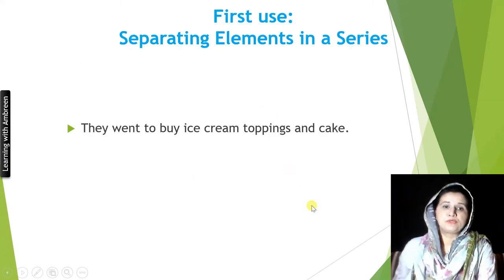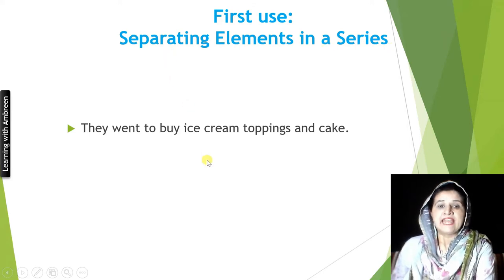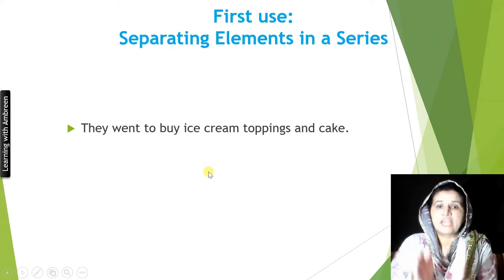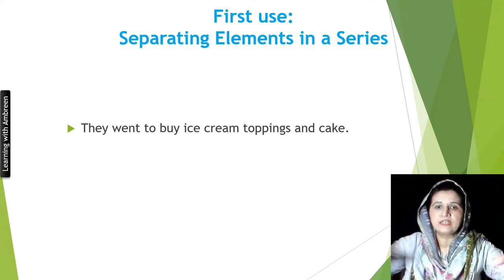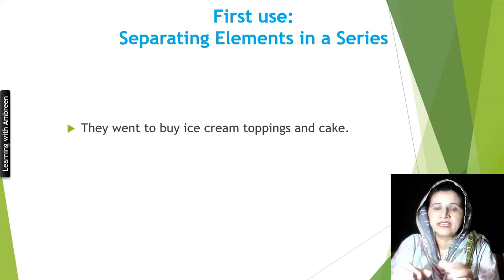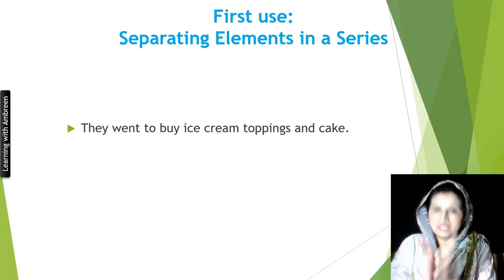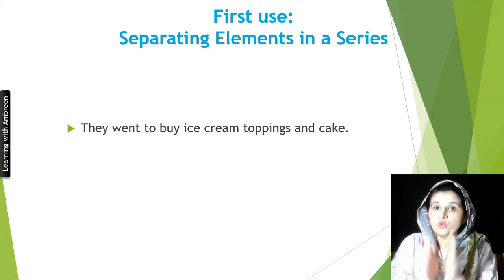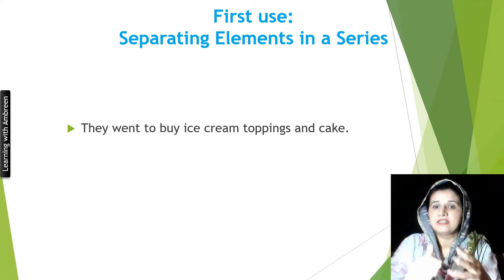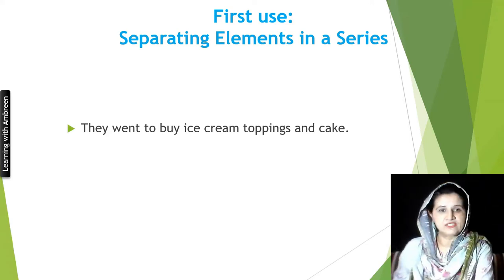First use: separating elements in a series. A comma is used to separate the elements in a series. When we have elements in any list, if we don't separate them through commas they will mix up and confuse the reader. To avoid that confusion, we separate the elements or items in the list.